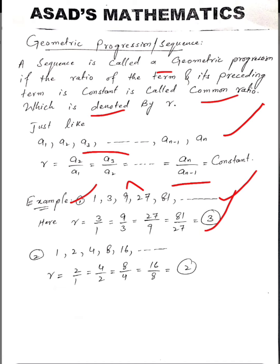So that sequence is called a geometric sequence and the common ratio r equals 3.